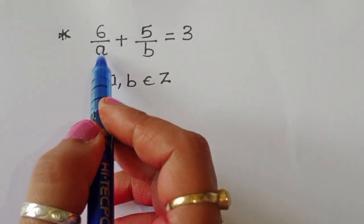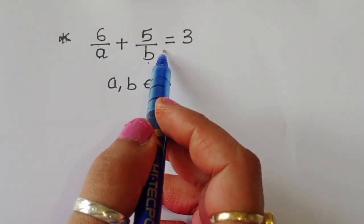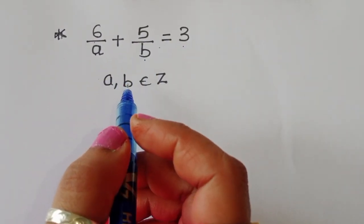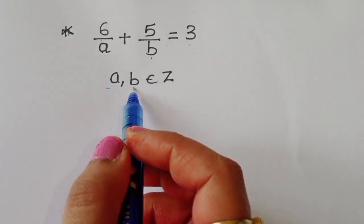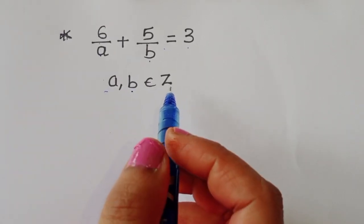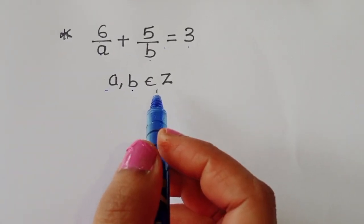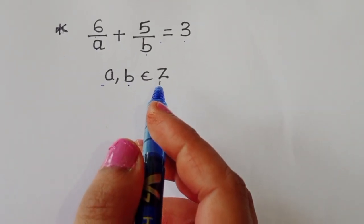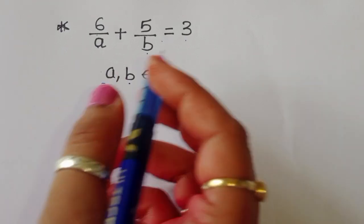The question is: given 6/a + 5/b = 3, with the condition that a and b belong to integers, we have to find out the values of a and b. Let's see the solution.